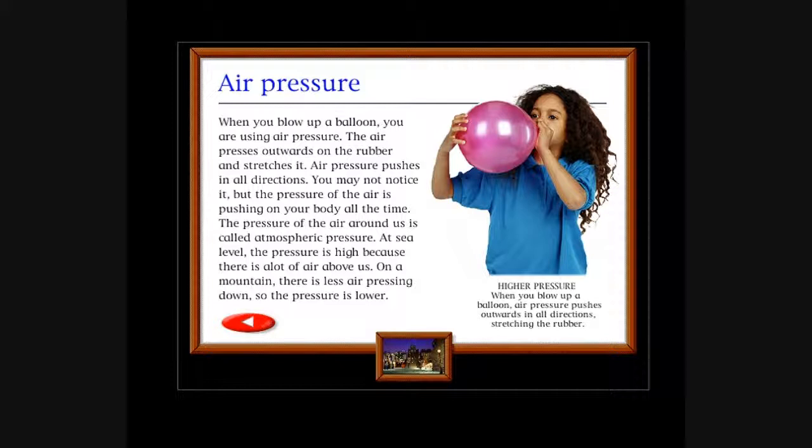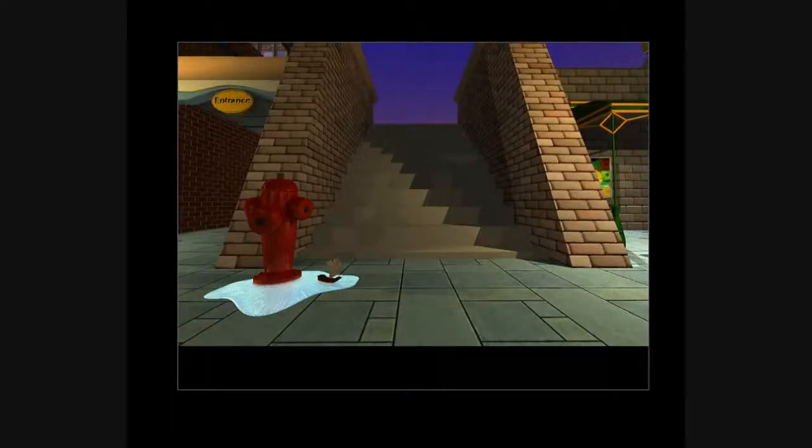Air pressure pushes in all directions. You may not notice it, but the pressure of the air is pushing on your body all the time. The pressure of the air around us is called atmospheric pressure. At sea level, the pressure is high because there is a lot of air above us. On a mountain, there is less air pressing down, so the pressure is lower. So at the moment we've got a lot of air pressing on us. I'm being crushed, squashing me.